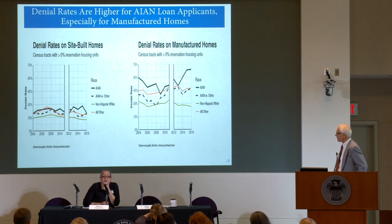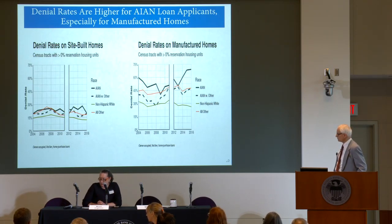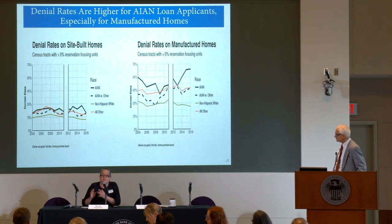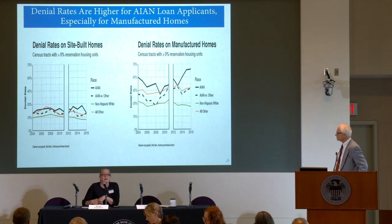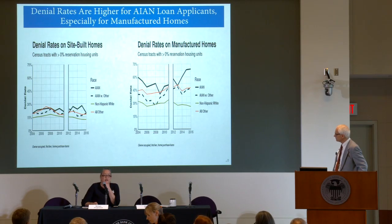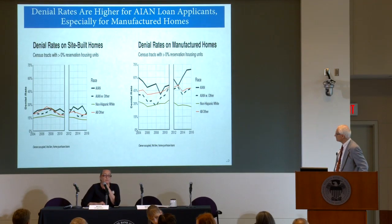Looking at the denial rates on manufactured homes and site-built homes, those denial rates are higher for American Indians and Alaska Natives. Another policy and practice that we want to underscore is how important it is to do credit counseling, homeownership training, and credit repair work — to try to increase the creditworthiness of potential borrowers, because we do see these disjunctions. Other work looking directly at credit files shows similar results, which underscores the importance of working directly on potential borrowers' credit scores.